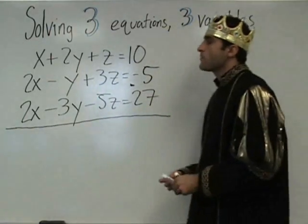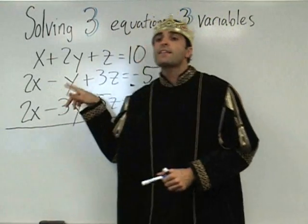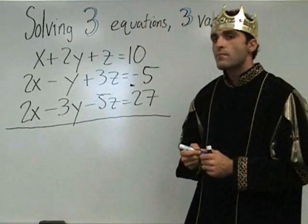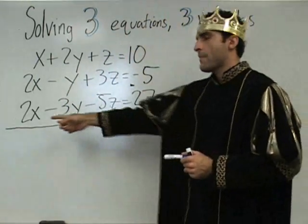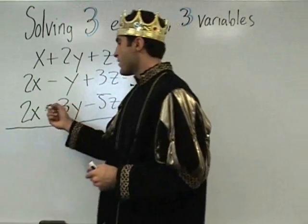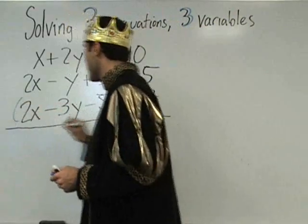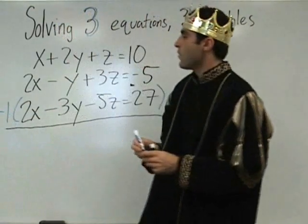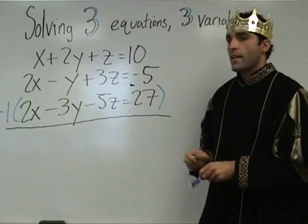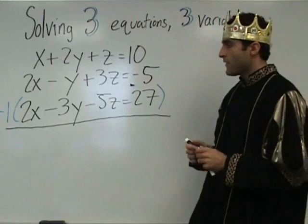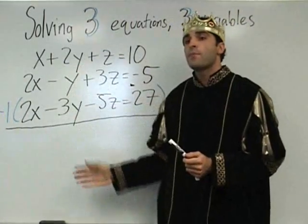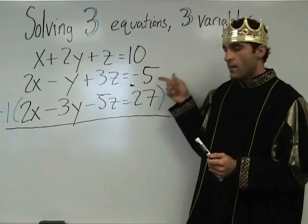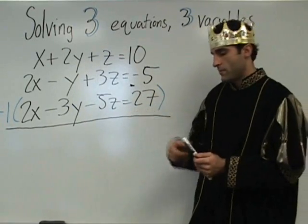So, what are we gonna multiply which equation by to eliminate x? Multiply by negative one. Sure, how about this one? Okay, so let's multiply the bottom equation by negative one. And, like I said before in previous lessons, I recommend rewriting both equations. So I'm gonna rewrite the second one and I'm gonna rewrite the third one. Let's go for it.